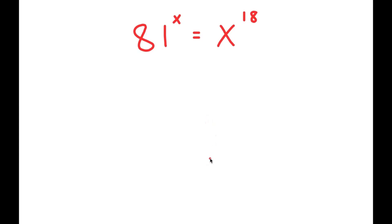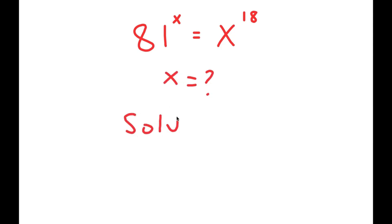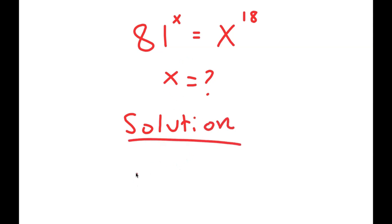In this problem, I have 81 to the power of x is equal to x to the power of 18. I want to find the value of x. For my solution, I'm going to rewrite this equation.